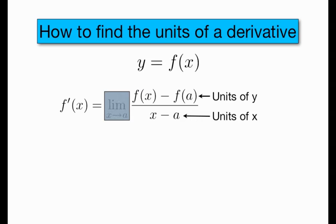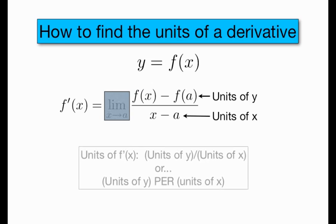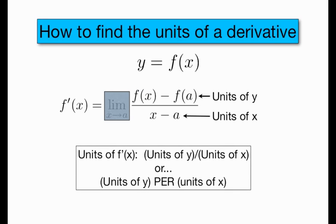And then the denominator. Those are measured in whatever units x was measured in. So the units of the derivative are just the units of y, whatever they are, divided by the units of x, whatever they are. Or we often say units of y per units of x.